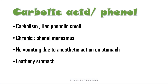Next, carbolic acid, also known as phenol. It has a characteristic carbolic or phenolic smell. Commercial carbolic acid is a dark brown liquid and is chiefly found in Dettol/Cresol. Poisoning with carbolic acid is known as carbolism. Chronic poisoning is called phenol marasmus, characterized by anorexia, weight loss, headache, and vertigo. There is no vomiting because of the anesthetic action on the stomach, and it causes a leathery stomach.